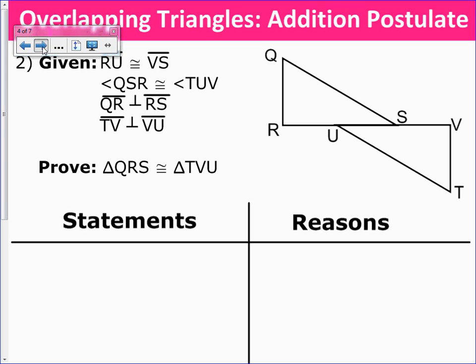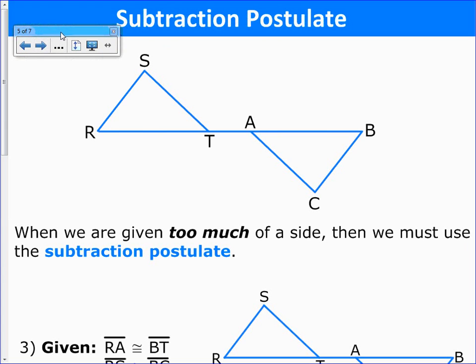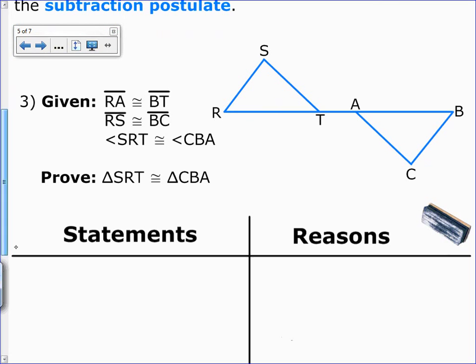We're going to skip this for now, and we'll be doing this question in class. Now we're going to look at the subtraction postulate. The subtraction postulate we use if we are given too much of one side, and we want to take some pieces away. In this example here, let's just look at what we're trying to prove first. We're trying to prove this triangle congruent to this triangle here. But in our given, we are given that RA, so this piece here, is congruent to BT, which is this piece here. That's too much of the side. We don't want that whole length. We want to cut it down.